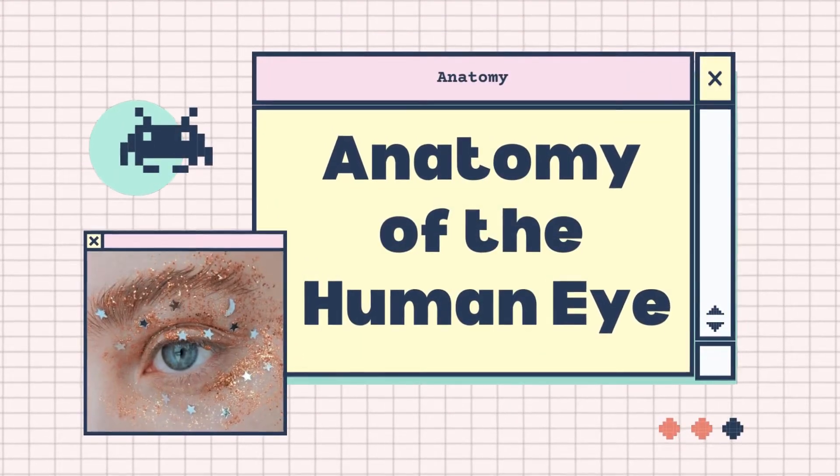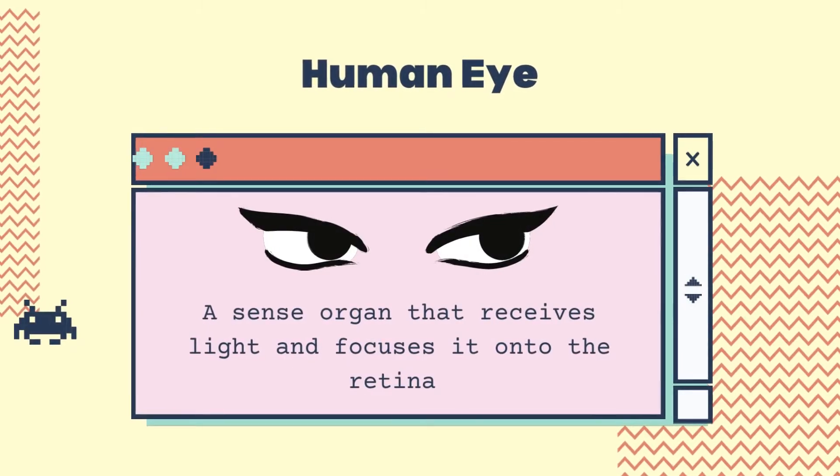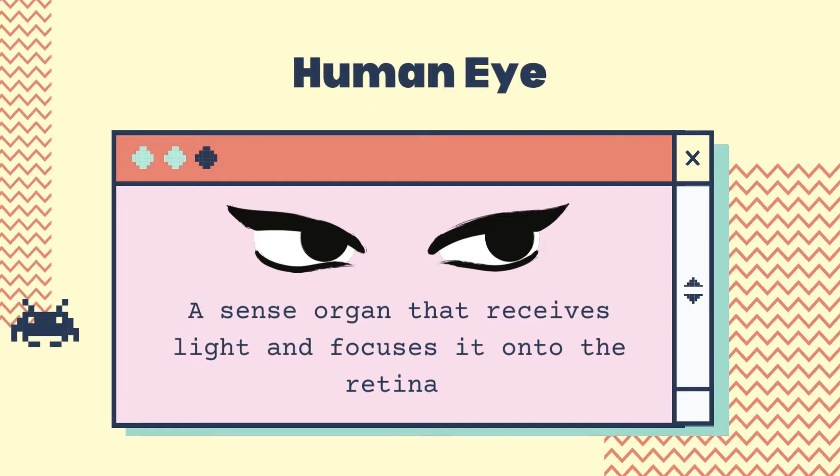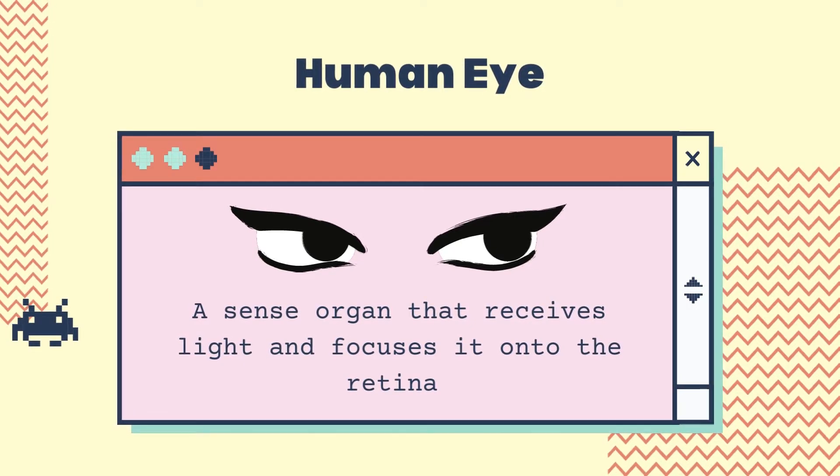Hi, today I am going to be talking about the anatomy of the human eye. The human eye is a sense organ that receives light and focuses it onto the retina. It is how an individual sees the world and it helps them translate the images that they see to information that they can perceive.